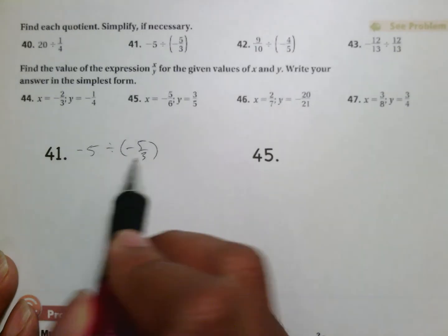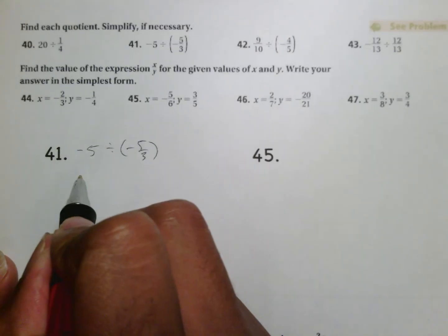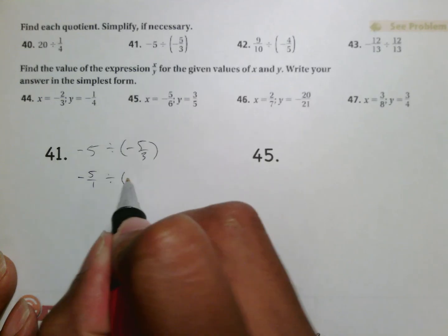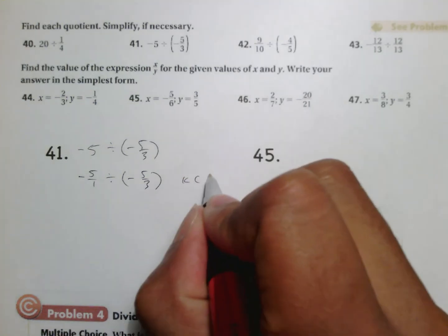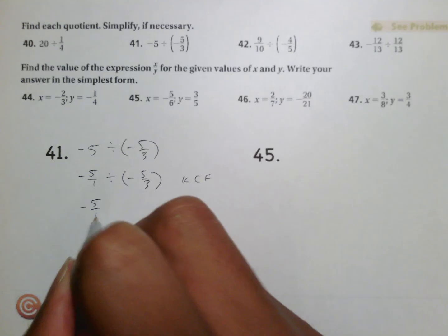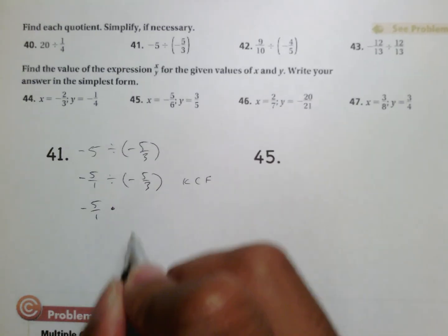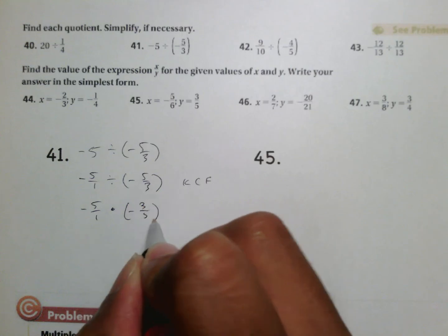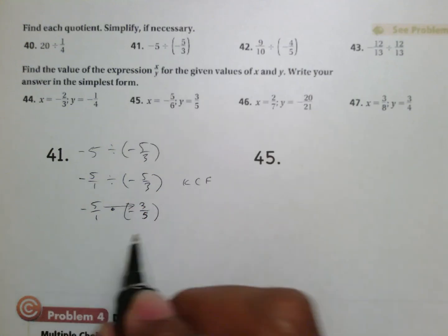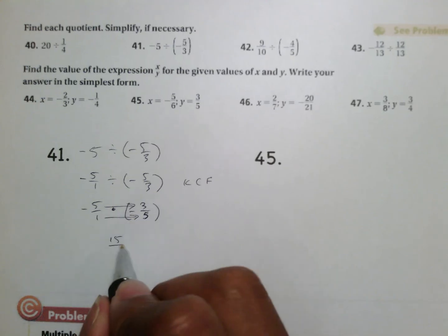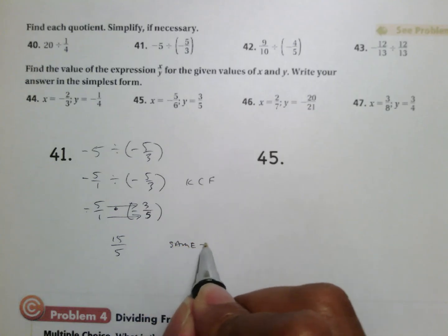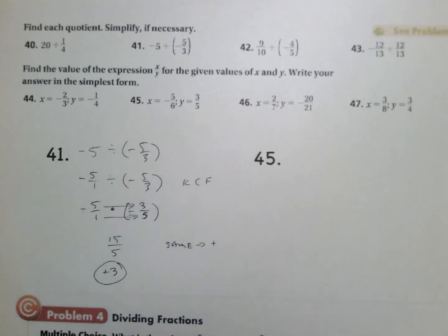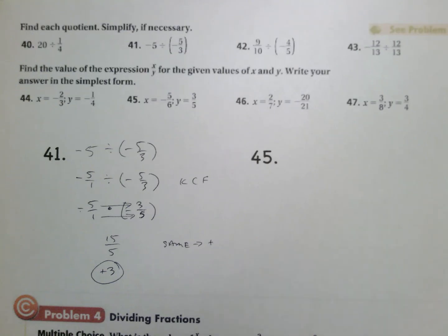Going back to number 41: negative 5 divided by negative five-thirds. Negative 5 isn't a fraction, but you can turn any number into a fraction by putting it over 1. So we have negative 5 over 1. Then keep change flip: keep negative 5 over 1 the same, change division to multiplication, and flip negative five-thirds to become negative three-fifths. Multiply across the top: 15. Multiply across the bottom: 5. The signs are the same, so it's positive, and 15 over 5 reduces to positive 3.